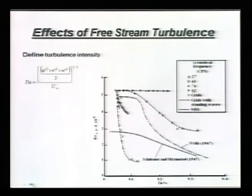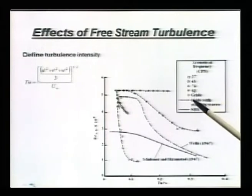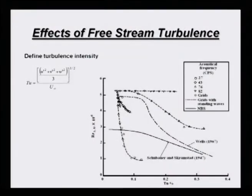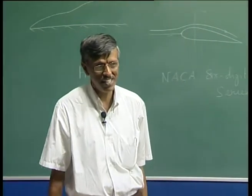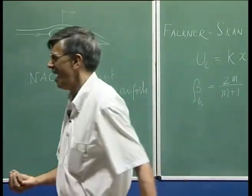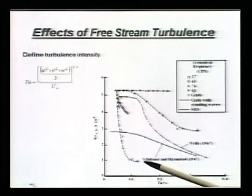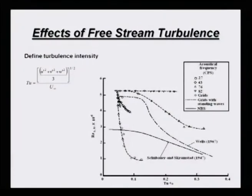Some results are being seen here - acoustical disturbances were created in a wind tunnel experiment for flow past a flat plate, at different frequencies: 27, 43, 76, and 82 Hz. And one case where some grids were put in the beginning of the test section - this grid data is this one. Grids create vortical disturbances directly, and the moment you do that, you can see that it actually brings down the transition location very, very significantly.